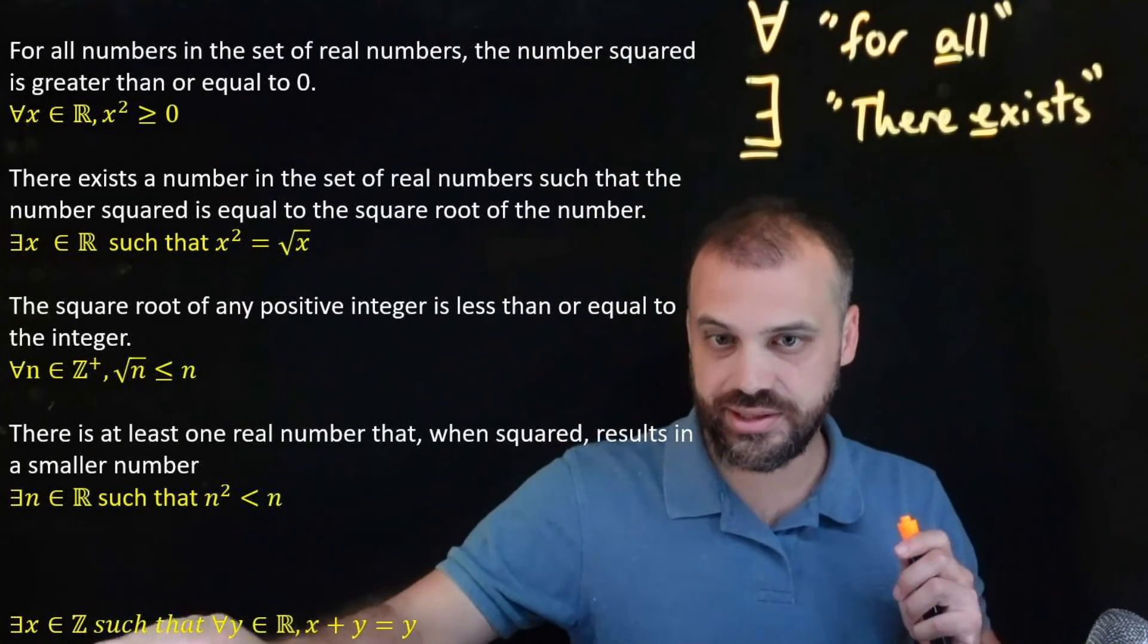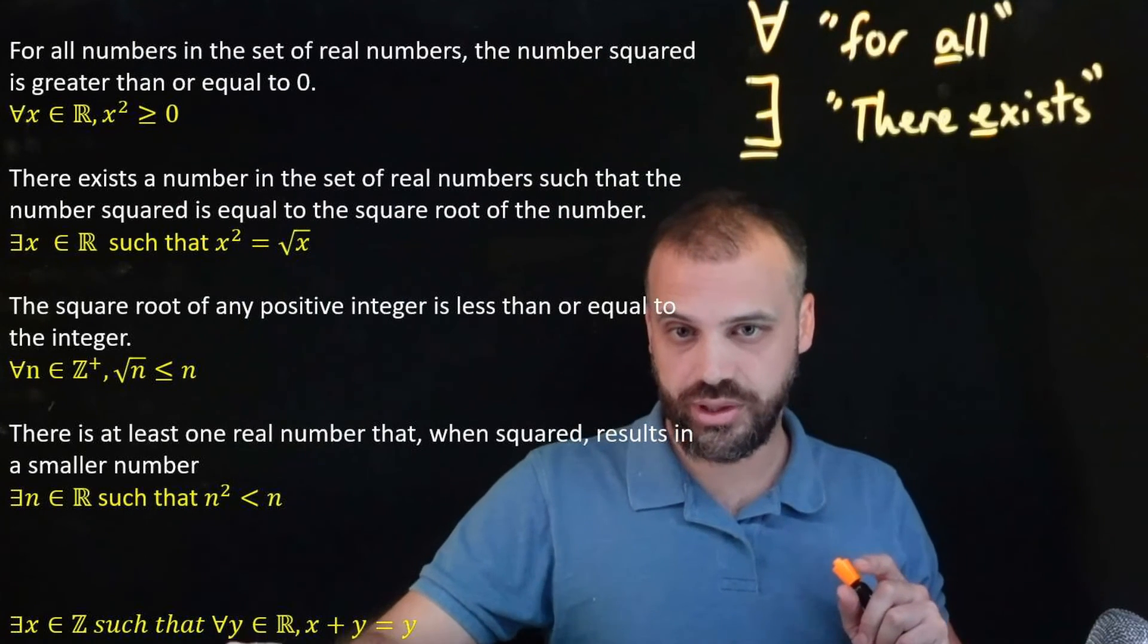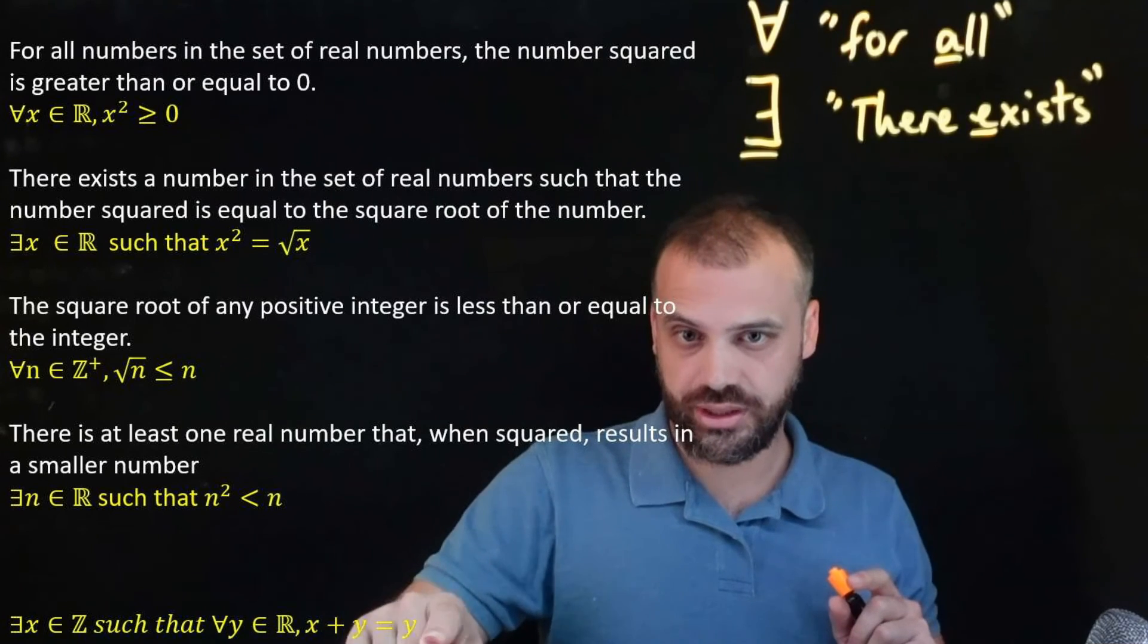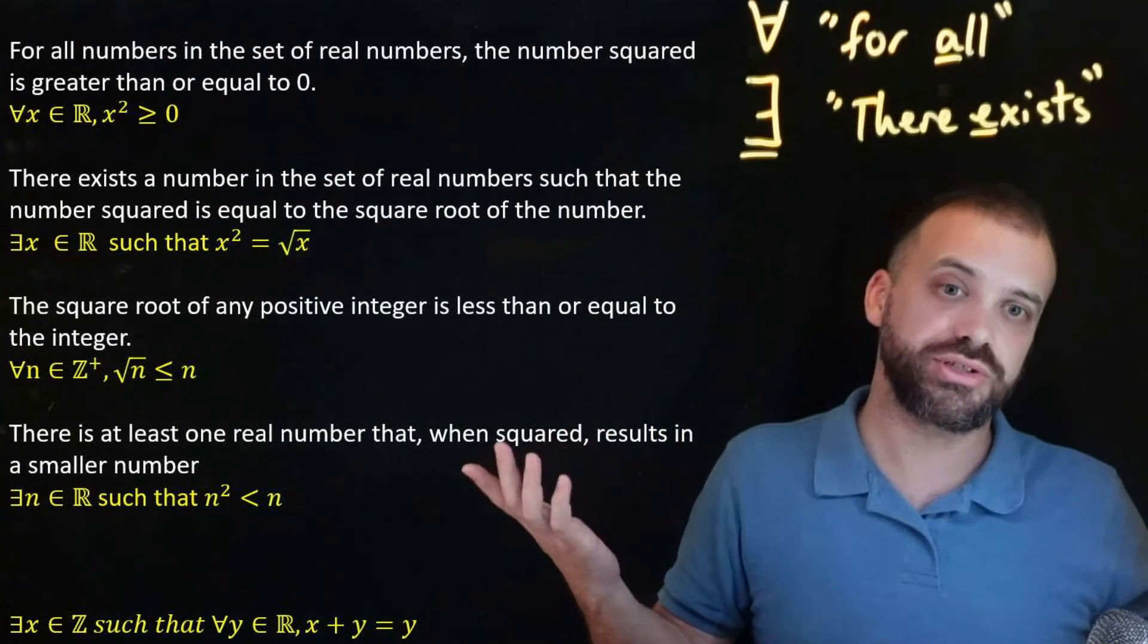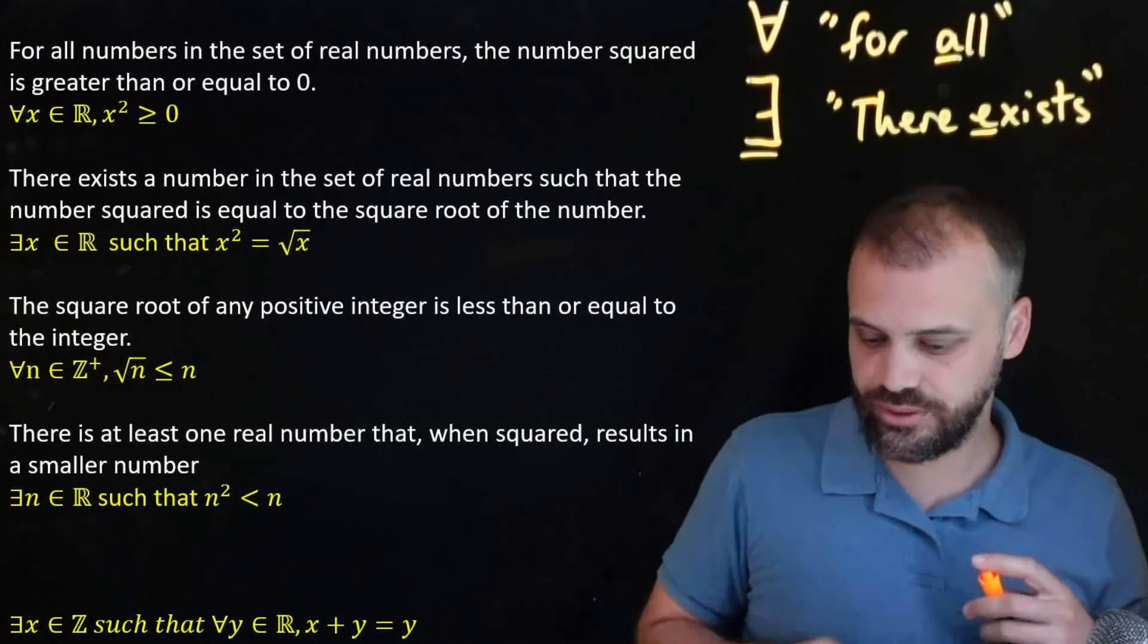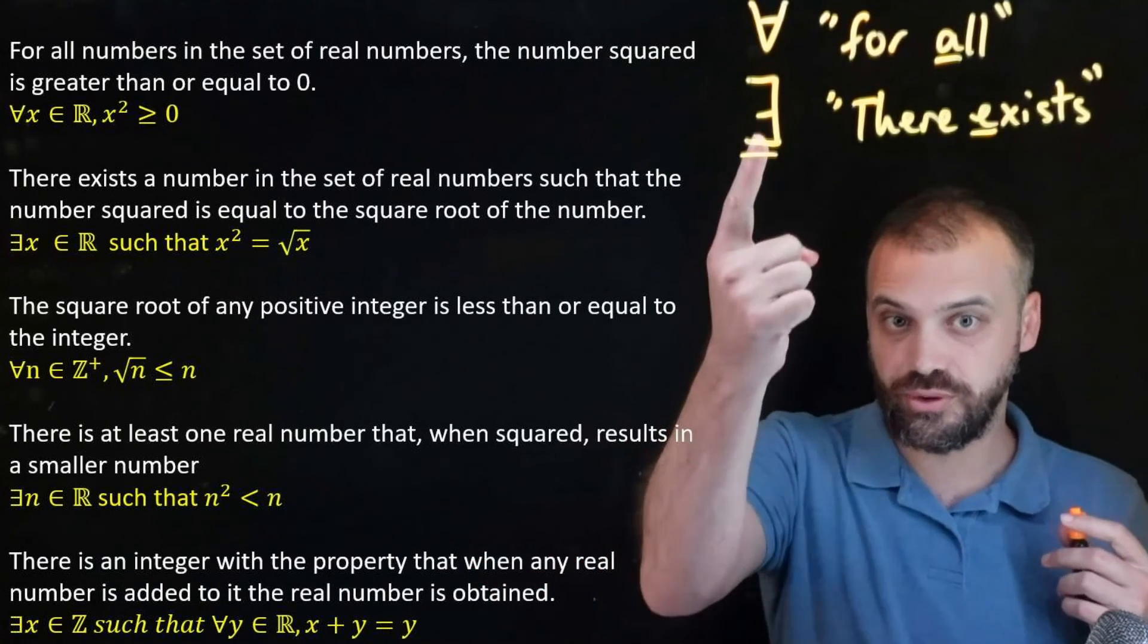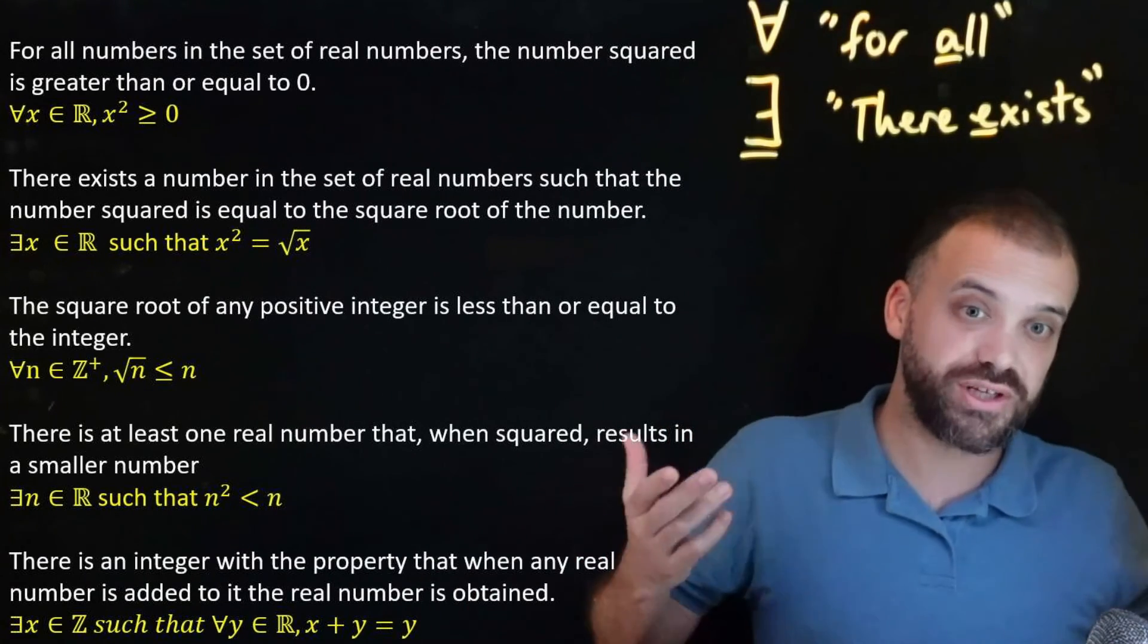So there exists some integer such that it doesn't matter what number you add to it, you're going to get the number that you added to it. That integer is zero. Zero plus any number makes the number that you started with. It's a bit of a doozy there. You can see we've got both of our symbols. That's why we're finishing on that one.